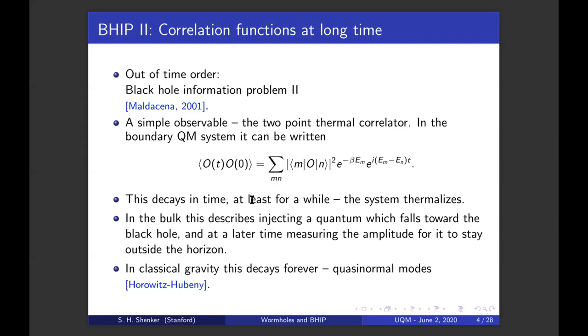And as we all know, this decays in time, at least for a while, the system thermalizes. Now in the bulk, this describes injecting a quantum, that's that operator, which falls toward the black hole and its horizon, settles onto the horizon. And at later time, measuring the amplitude for it actually to have stayed outside the horizon. Well, in classical gravity, this decay is forever. You ping the black hole, it undergoes these damped oscillations called quasi-normal modes, and the black hole settles back in to its nice original configuration.